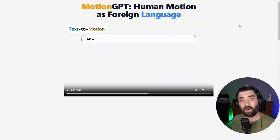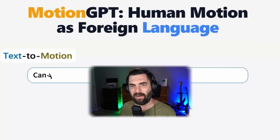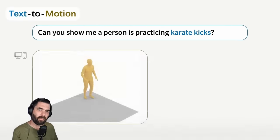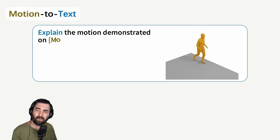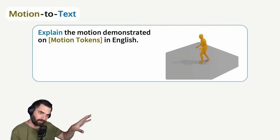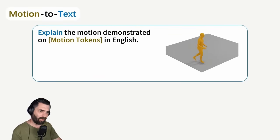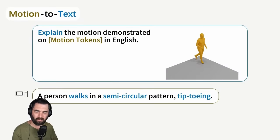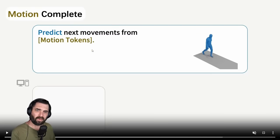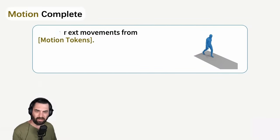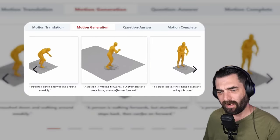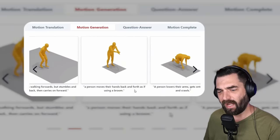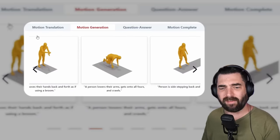Another research I recently came across is called MotionGPT - human motion as foreign language. It essentially generates text-to-motion. For example, 'Can you show me a person who is practicing karate kicks?' and it generates that motion. It's also capable of motion-to-text: given a video of a character walking around, the response from the computer was 'a person walks in a semi-circular pattern tiptoeing.' It can also predict the next movements from what it sees. For example: 'A person is walking forwards but stumbles and steps back, then carries on forward' or 'a person moves their hands back and forth as if using a broom.'